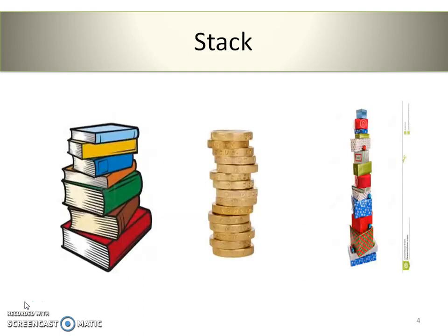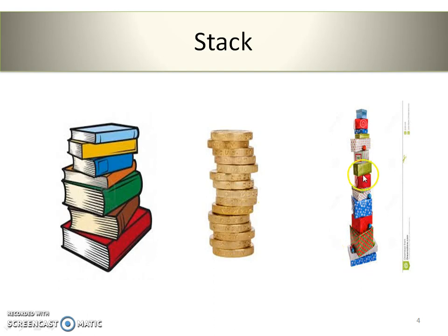Let's look at some pictures that explain different stacks available in real life. The first stack is of books, where books are kept on top of each other to form a stack. Another example is a stack of coins, and the last example is a stack of gifts. If we want to access any element from the stack, we will obviously access the first element available on top of the stack. This is the property of the stack.